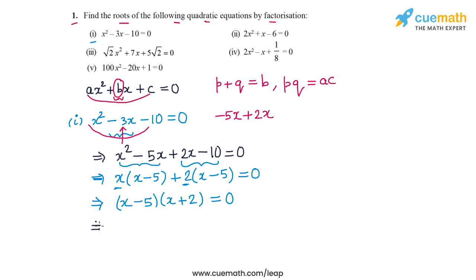The roots of this equation are x = 5 and x = -2. So the roots are 5 and -2. That solves part 1.